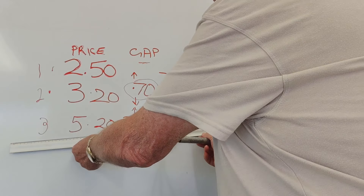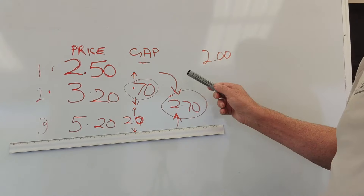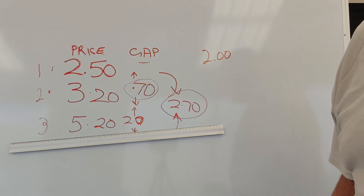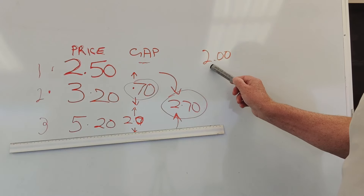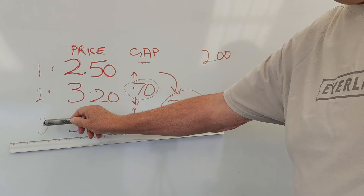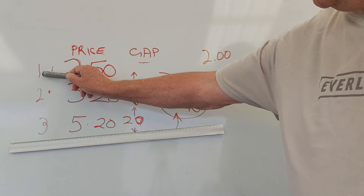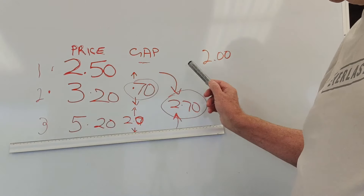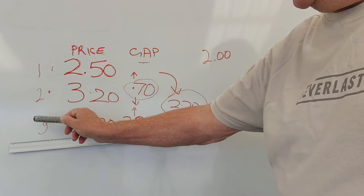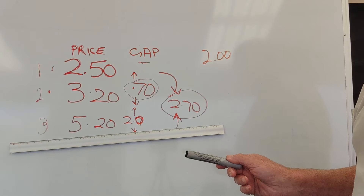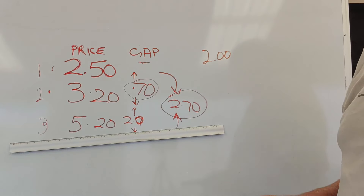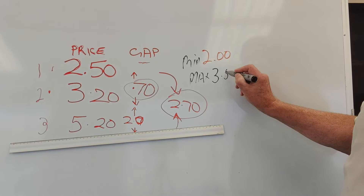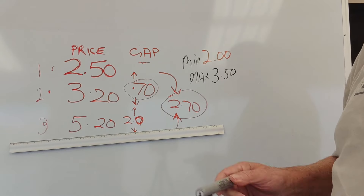If we were to look at the gap between the first favorite and the third favorite, we would see that the gap there is $2.70 — that is the price difference between this one and this one here. So if we had in Watch The Gap bot a minimum limit of $2, and we wanted to bet the third favorite as long as it was $2 or more difference from the first favorite, that bet would be placed. We can also set a maximum price; if our maximum price was $3.50, then of course that bet would still qualify. So that is the principle of Watch The Gap.